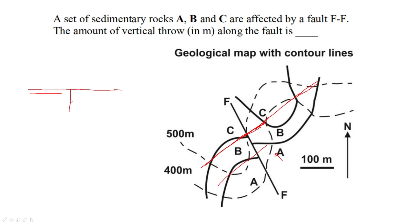And this would be the fault plane — it would appear vertical like this. The beds on the left side would appear horizontal: A, B, and C. On the right side of the fault, they are displaced, and this is A, this is B, and this is C. This displacement is 100 meters.